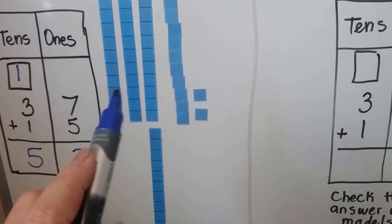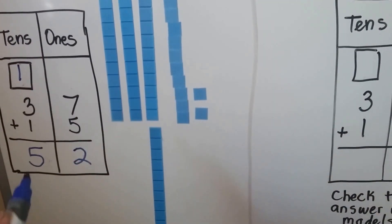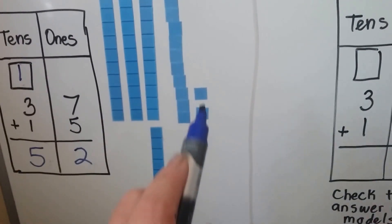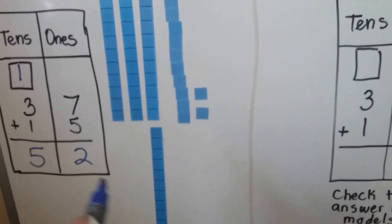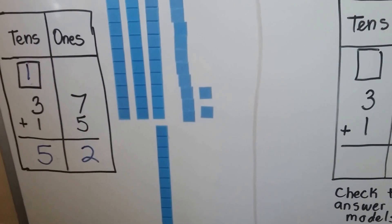Now, how many tens do we have? 1, 2, 3, 4, 5 tens. Yes, that's correct. And 2 ones are left. We have 52.